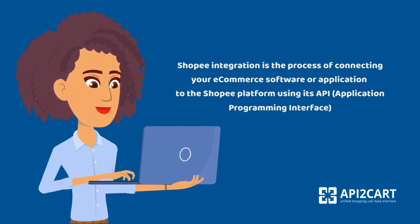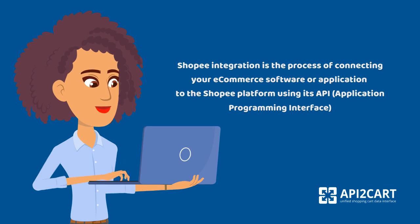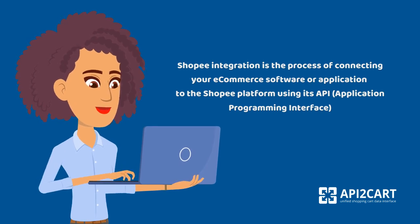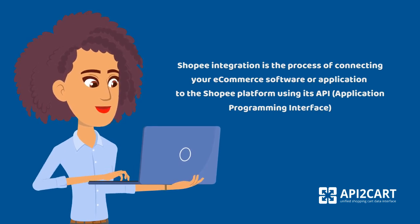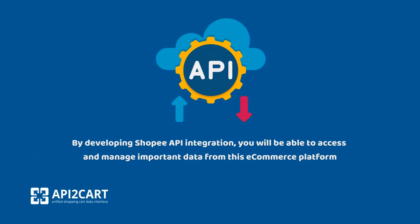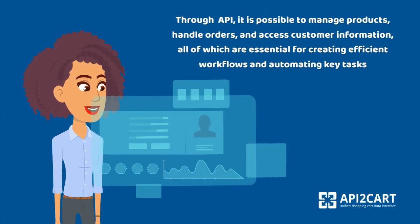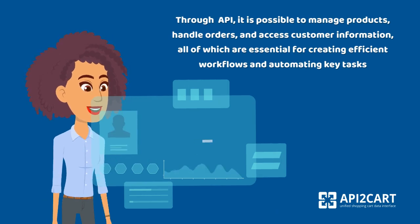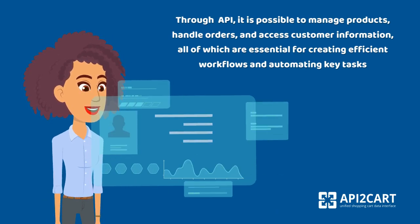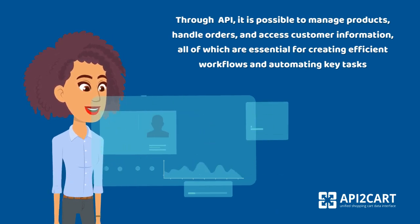Shopee integration is the process of connecting your e-commerce software or application to the Shopee platform using its API — application programming interface. By developing Shopee API integration, you will be able to access and manage important data from this e-commerce platform. Through API, it is possible to manage products, handle orders, and access customer information, all of which are essential for creating efficient workflows and automating key tasks.